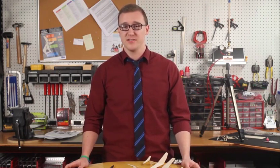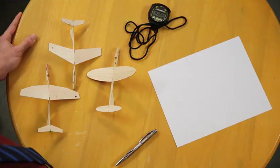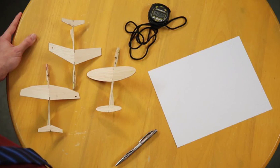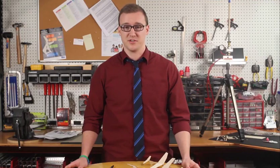There are a couple of things you'll need to do this activity. A stopwatch, all of your glider models, a paper and pencil for recording, and the AP rocket launcher too.